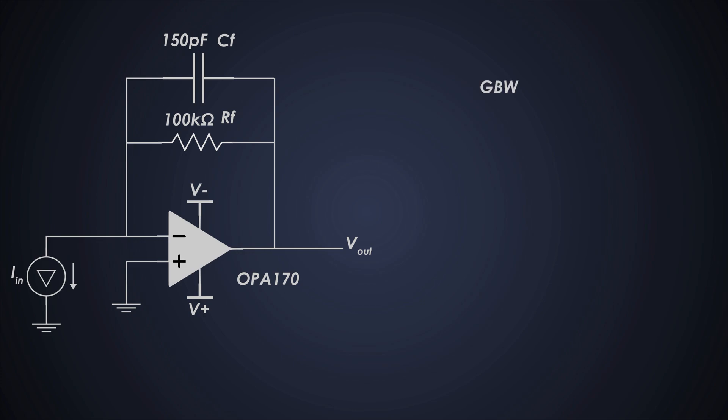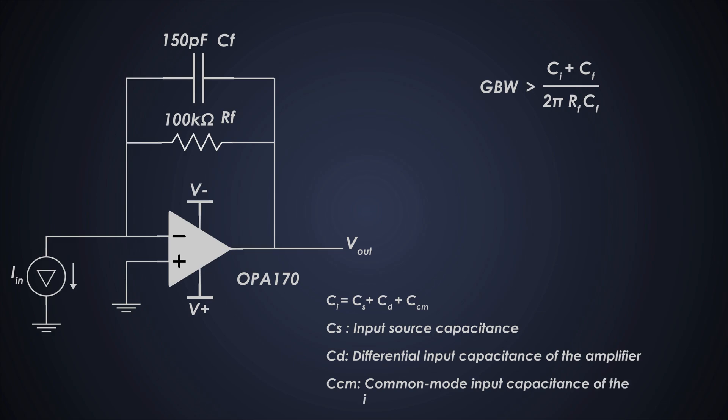Now we have to calculate the gain bandwidth product for this application and check if the selected op-amp will work here using this formula. Where CS is input source capacitance, CD is differential input capacitance of the amplifier, and CCM is the common mode input capacitance of the inverting input.